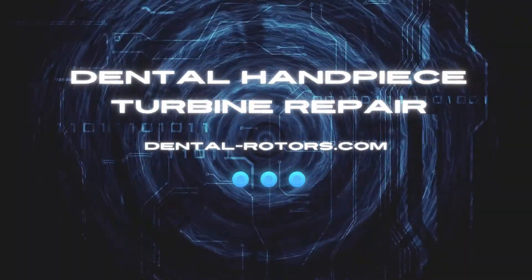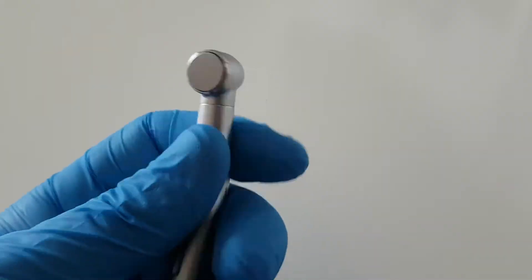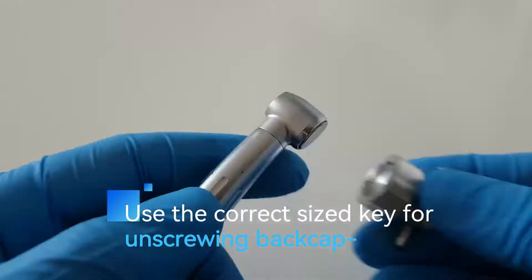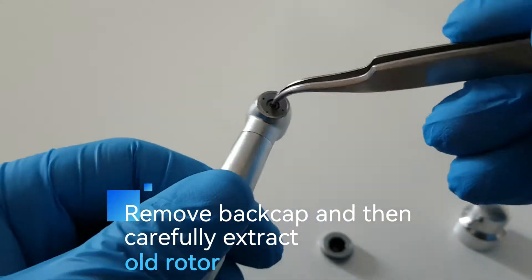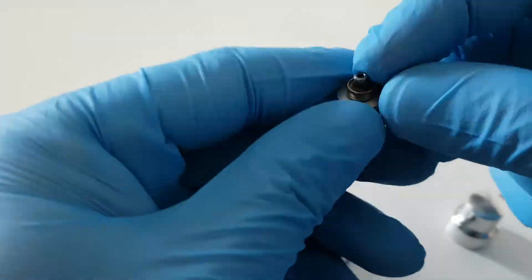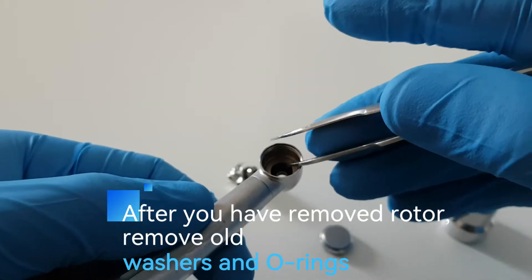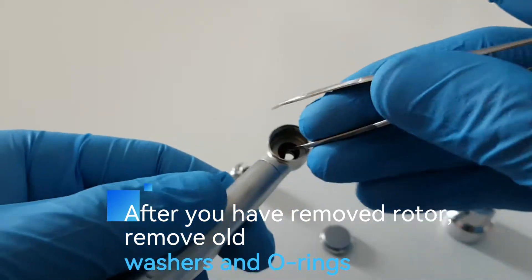Dental handpiece turbine repair. Use the correct sized key for unscrewing the back cap. Remove the back cap and then carefully extract the old rotor. After you have removed the rotor, remove the old washers and o-rings.